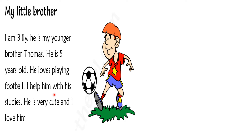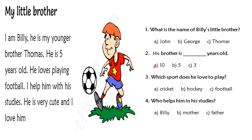This is the little passage given to you children. Now you have to answer some questions. There are options given to you. What is the name of Billy's little brother? He is my younger brother, Thomas. So his name is Thomas. His brother is dash years old — how old is he? Five. So your correct answer is five.